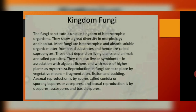Those fungi that depend on living plants and animals are known as parasites. Parasites can be of two types: endoparasites, which live inside the body, and ectoparasites, which live on the surface of the body. Certain fungi can also exist as symbionts — organisms which live in a mutual relationship with each other — for example, in association with algae in lichens.